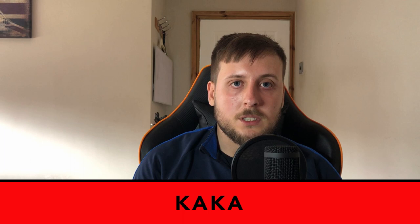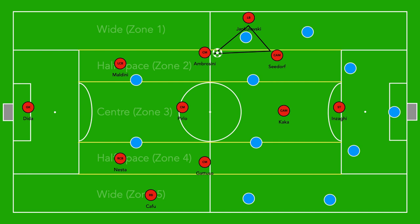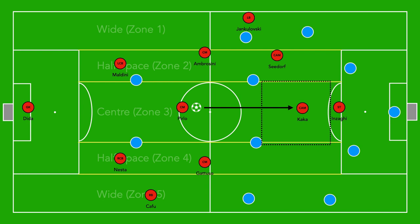Now let's focus on Kaká between the lines, because this was a strategy AC Milan really tried to utilise. Kaká was one of the best players of the time and finished top scorer in that season's Champions League, so getting him on the ball was a priority. The central area could be quite congested due to the two attacking midfield players, so to free up space for Kaká centrally, Seedorf moved slightly to the left. This also allowed Seedorf to support Ambrosini and the left-back as the ball progressed forward.